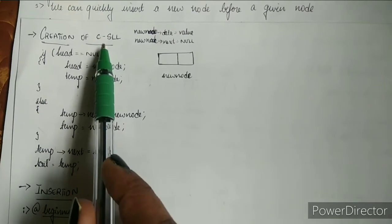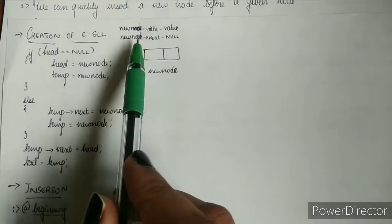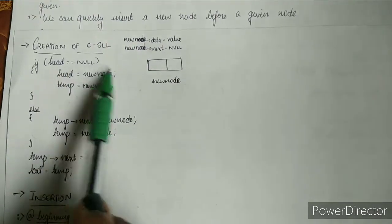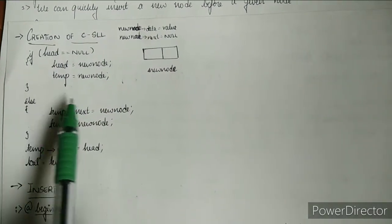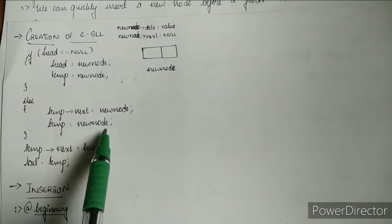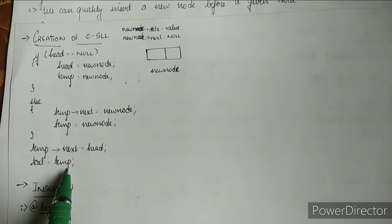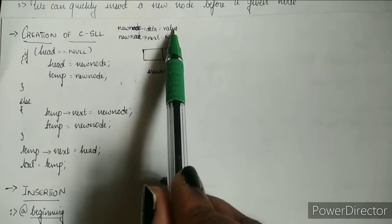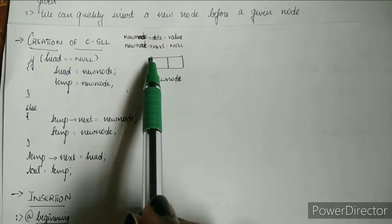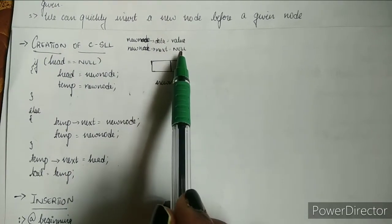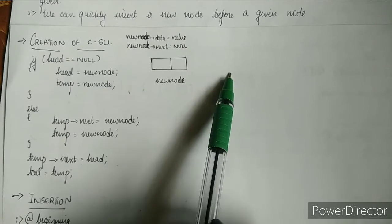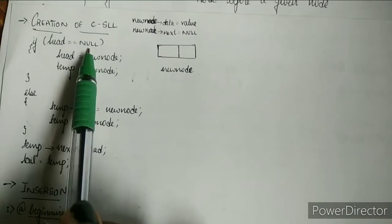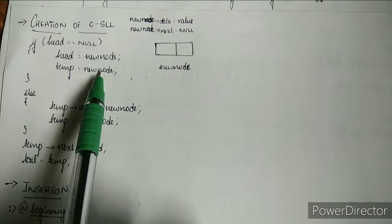For creation of a circular singly linked list, the code is: new->data = value; new->next = NULL. If head is NULL, head = new node and temp = new node. Otherwise, temp->next = new node, temp = new node, temp->next = head, tail = temp. First we allocate memory, enter the value into the new node's data field, and set next to NULL since we don't yet know its position.